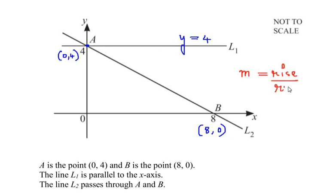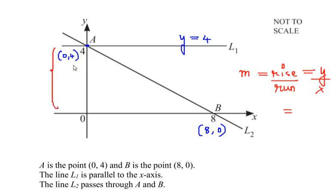The slope or gradient m is represented as rise over run. Rise represents the y-length and run represents the x-length of the given line. For line L2, the height where it crosses point A is 4 with respect to the x-axis, so the rise is 4. The run, which is the length between the origin and point B, is 8.